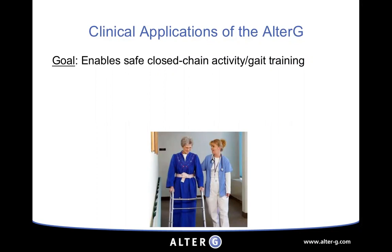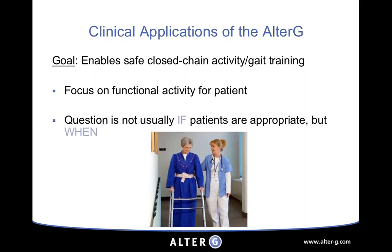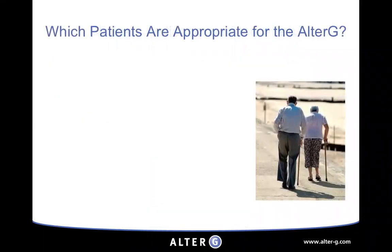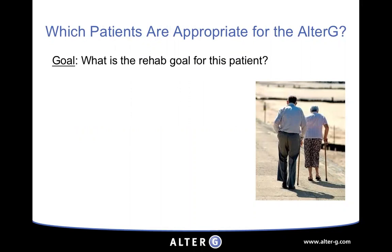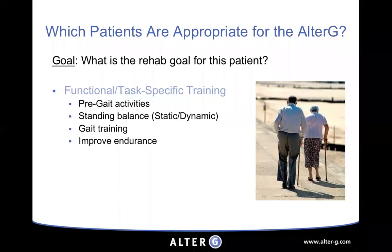The goal of the anti-gravity treadmill is to enable safe, closed kinetic chain activity and gait training. Focus on the functional activity for the patient, not the diagnosis — whether it's a CVA, TBI, Parkinson's, or cardiovascular conditions. It's typically not a question of if patients are appropriate, but when. If you're getting a patient up standing and working on gait training, they're going to be appropriate. Think about goals like pre-gait activities, weight shifting, sit to stand, transfers, and walking.